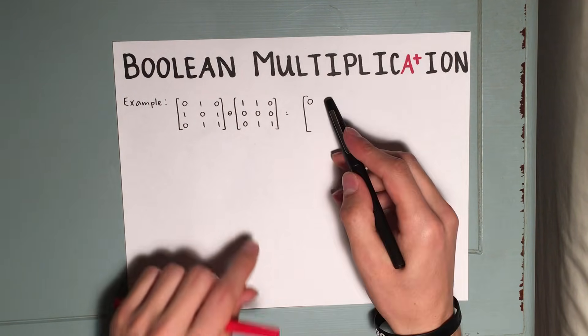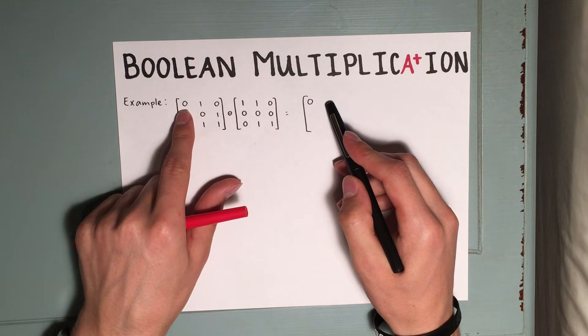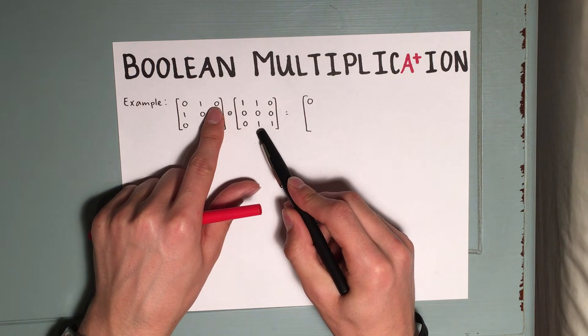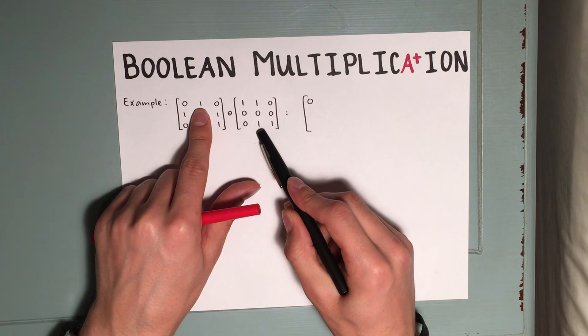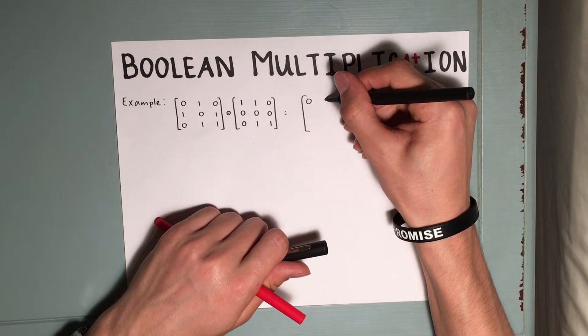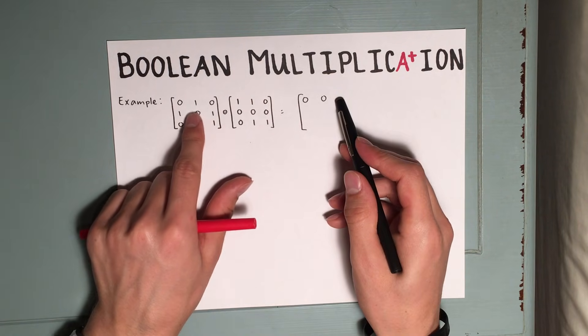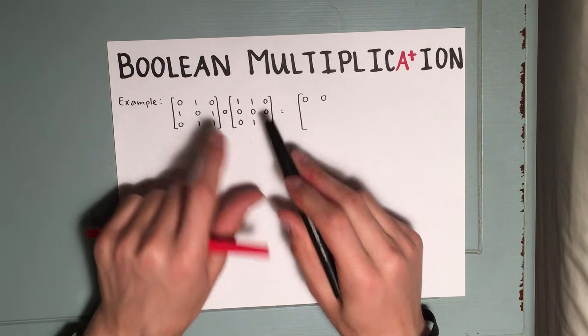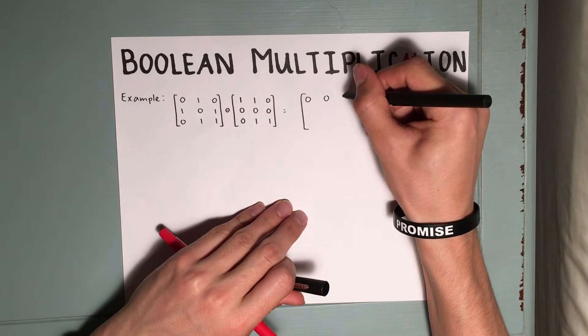For the first row of the second column, we do a similar thing. We look at the first row and the second column. Again, we only have a one in the second position, and we have a zero in the second position here. So we have another zero. For this third position, again, there's a zero in the second position, so we complete our row of zeros.